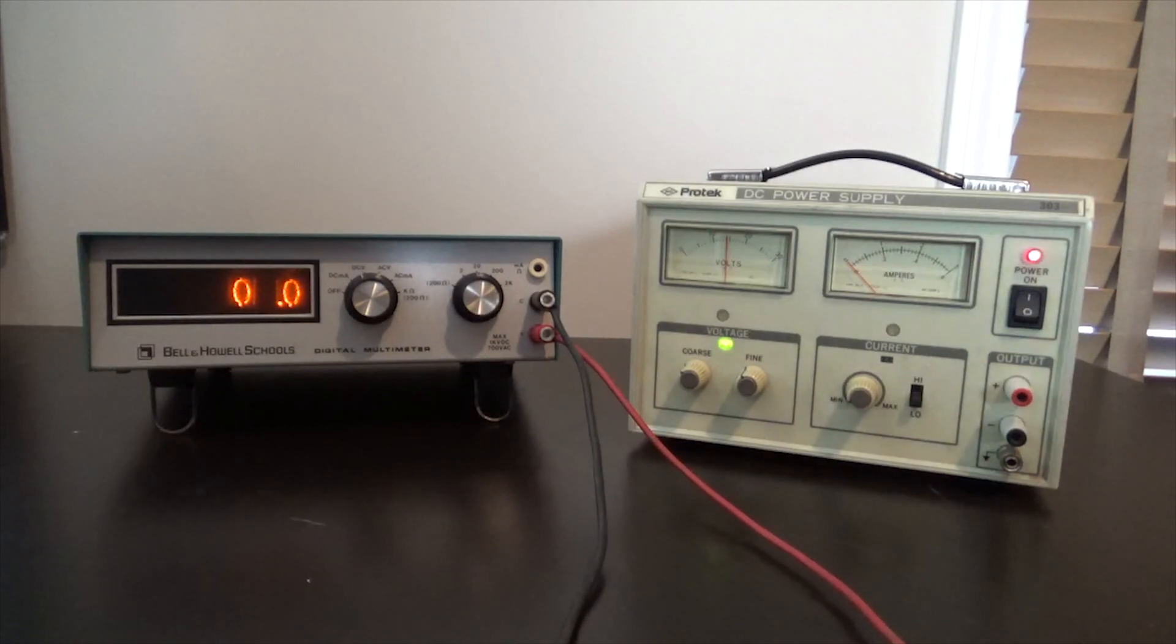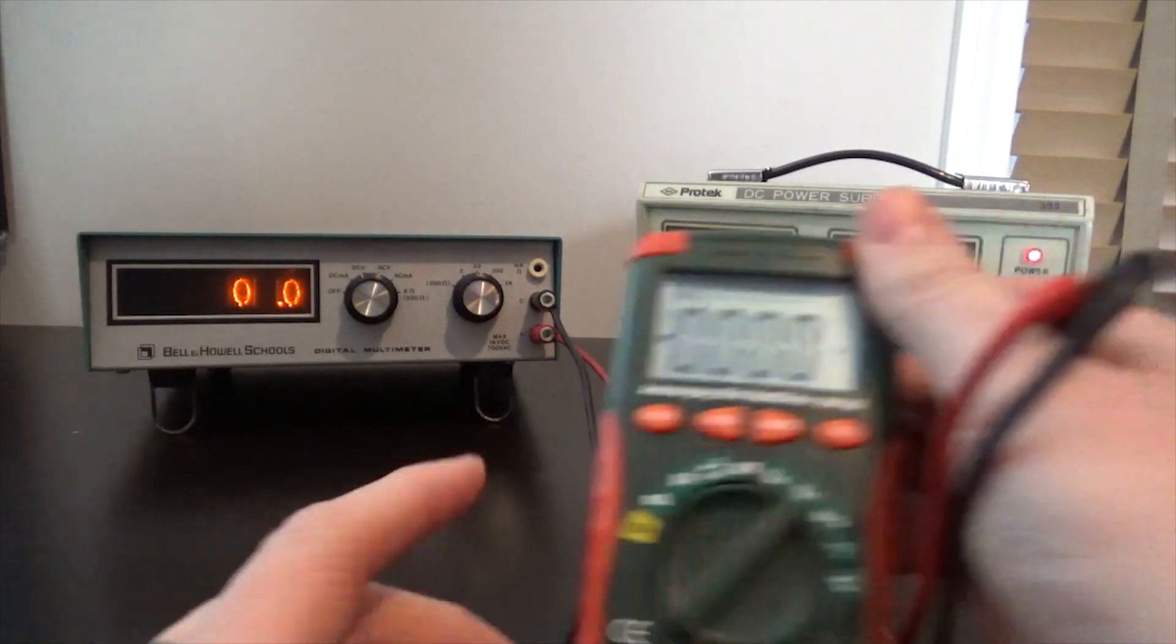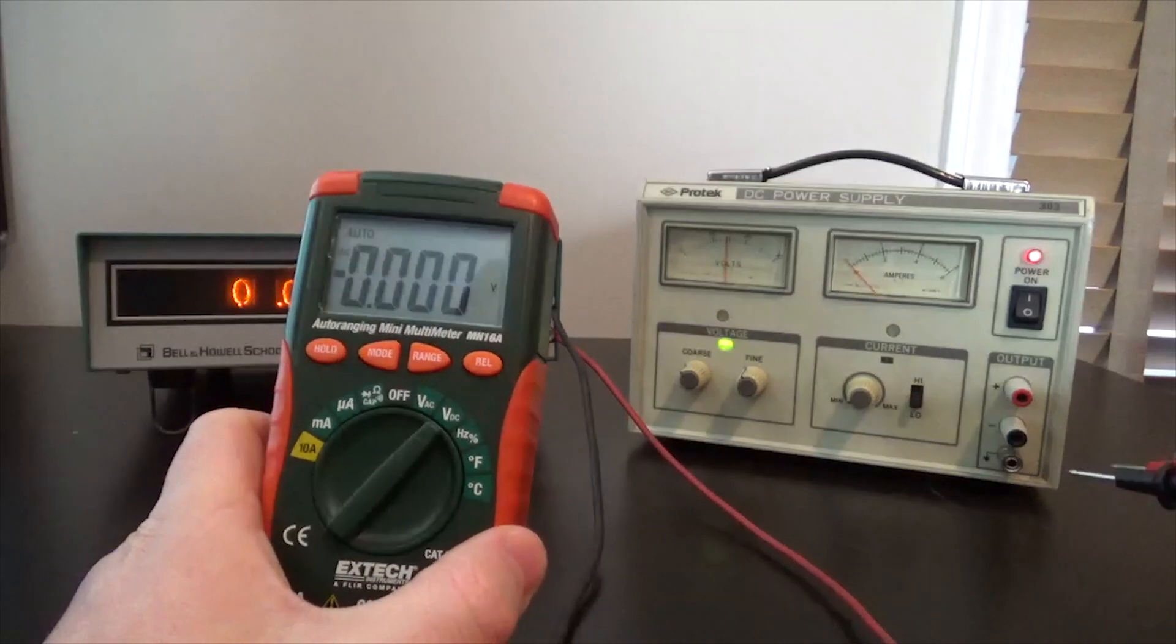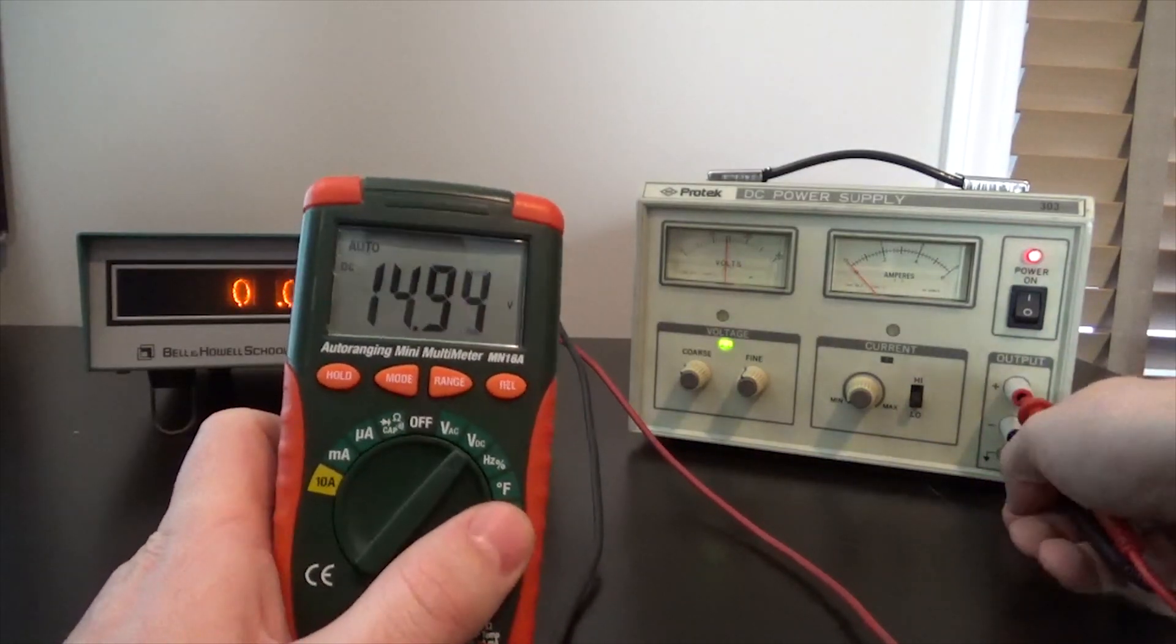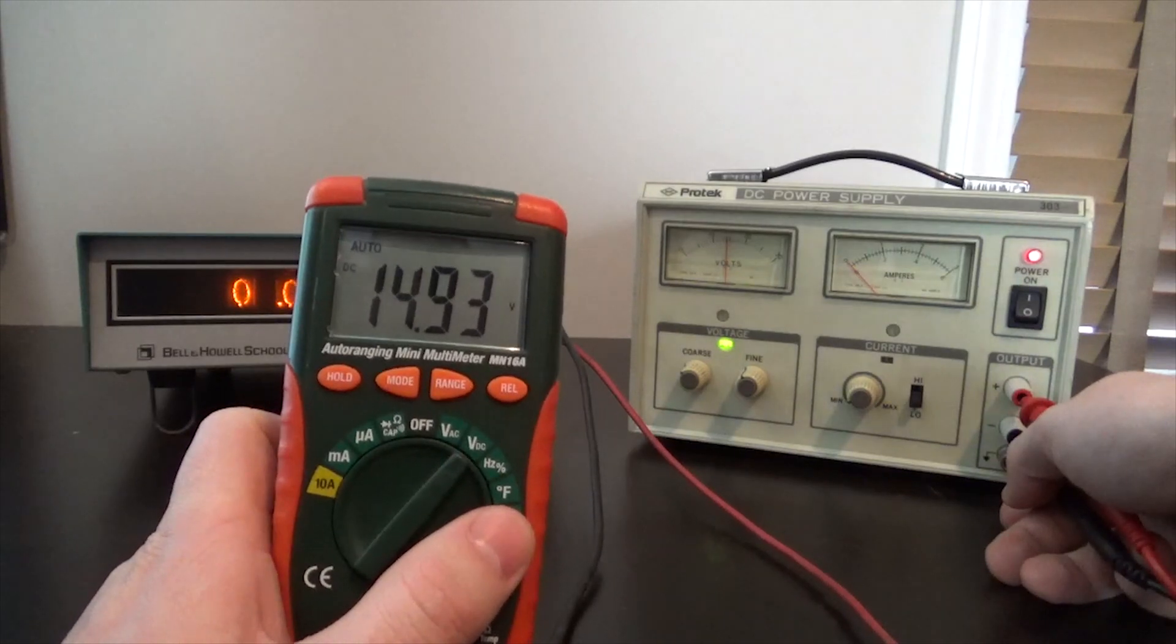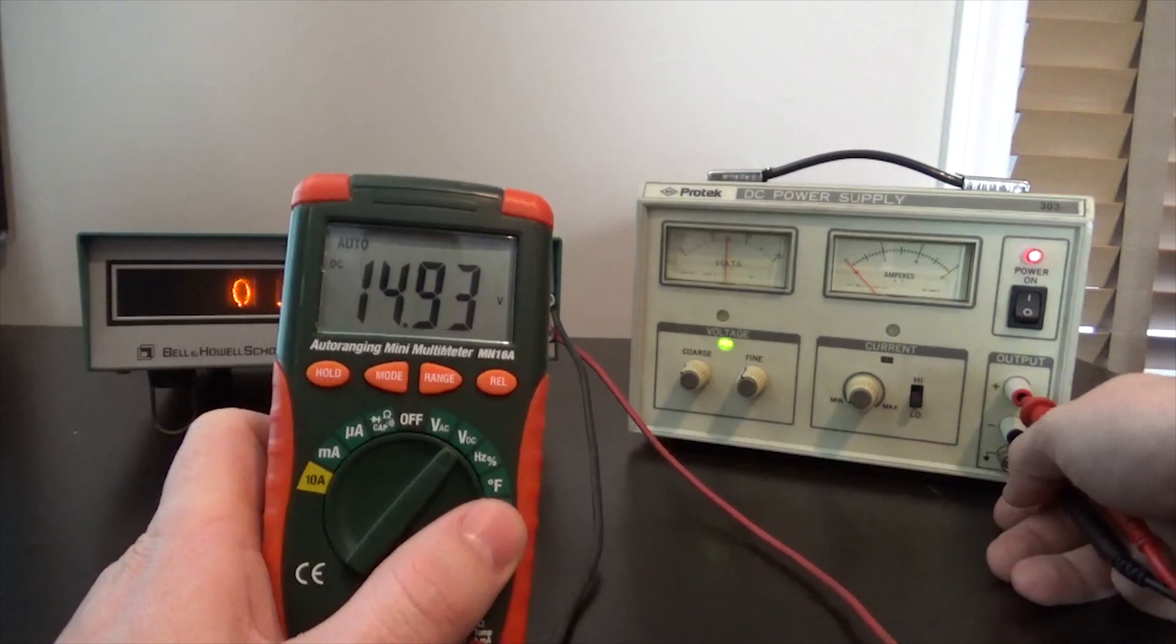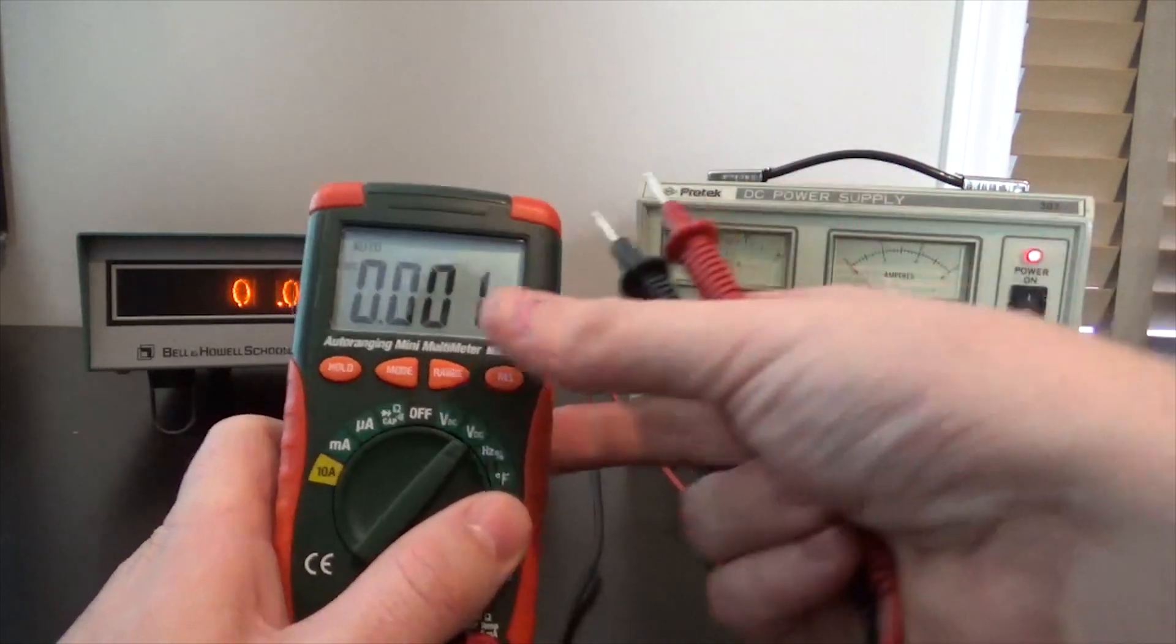You see, I have our DC power supply on the bench here that's dialed into 15 volts DC. Let's see how close it is with a modern multimeter. 14.93. That's certainly close enough. I'm not even going to try to adjust that.